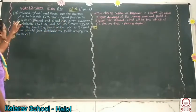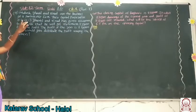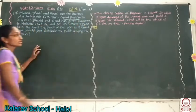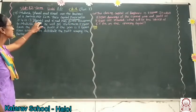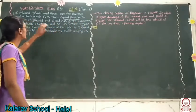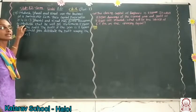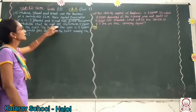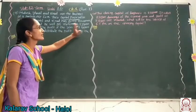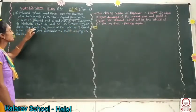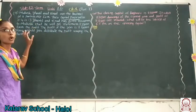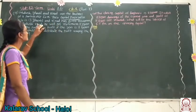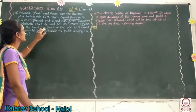Their capital proportion is 4:2:3. Note that this is the capital proportion, not the profit proportion. Dhaval and Neenoth have given a guarantee to Mukesh that he will get a minimum of Rs. 35,000 from the profit.